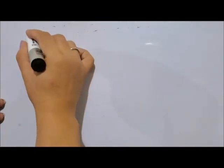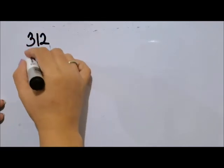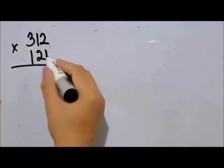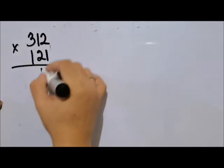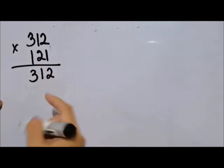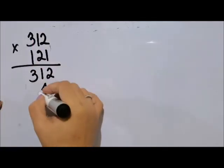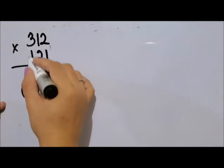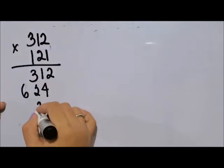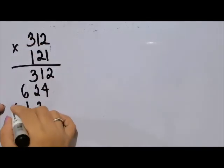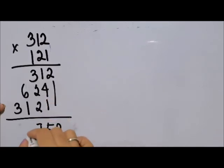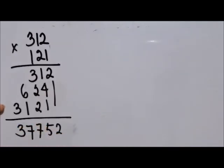I have here an example: 312 times 121. From the traditional way, 1 times 2 is 2, 1 times 1 is 1, 1 times 3 is 3. Then 2 times 2 is 4, 2 times 1 is 2, 2 times 3 is 6. Then 1 times 2 is 2, 1 times 1 is 1, 1 times 3 is 3. Then you add: bring down 2, 5, 7, 7, and 3. So this is the traditional way.